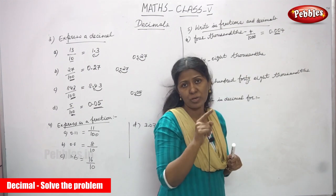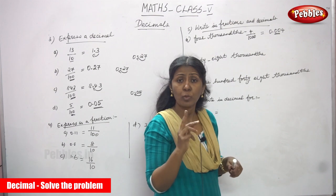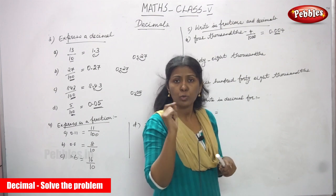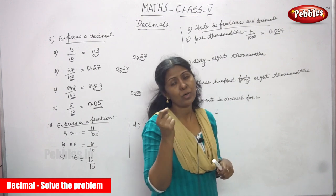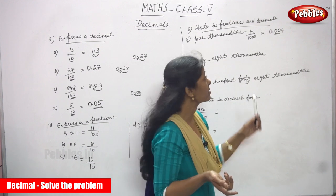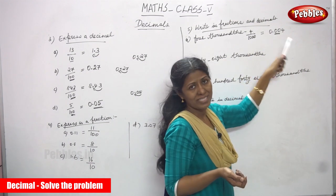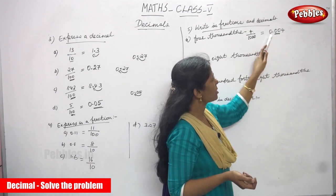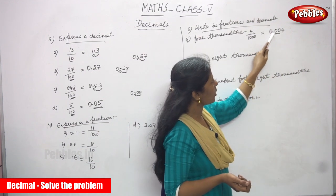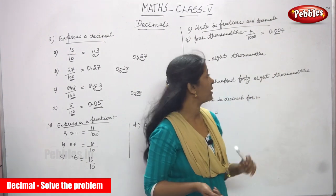Since you need 2 more digits and don't have them, you write zeros. The answer is 0.004.